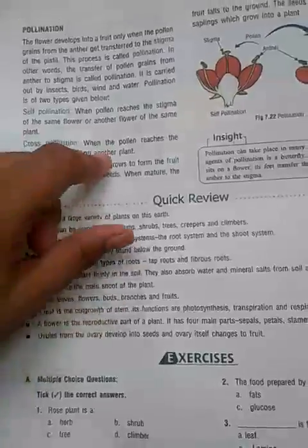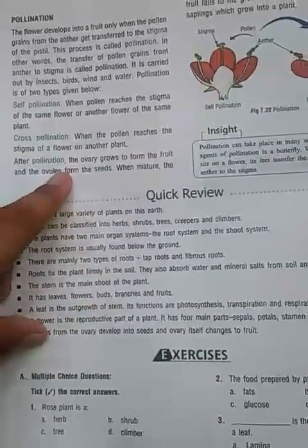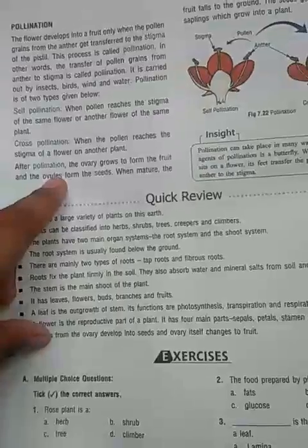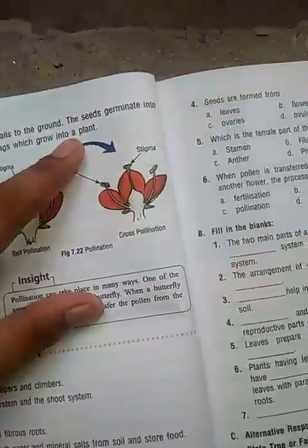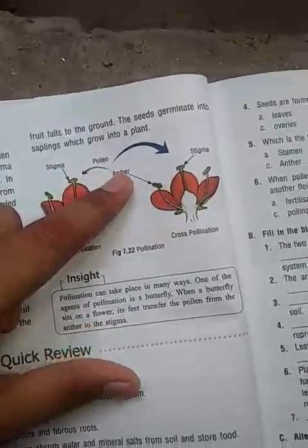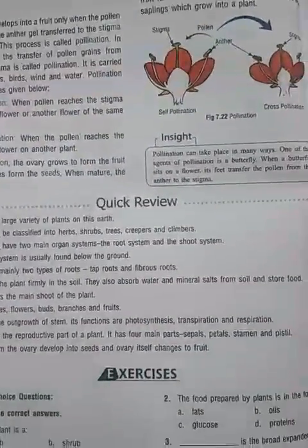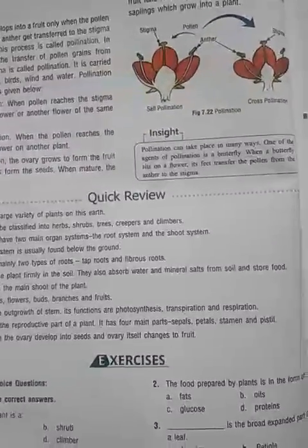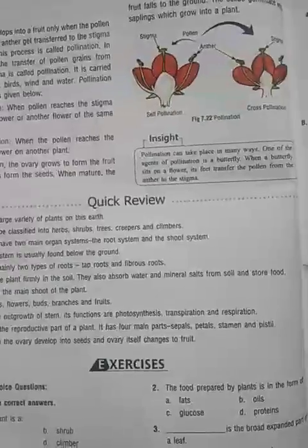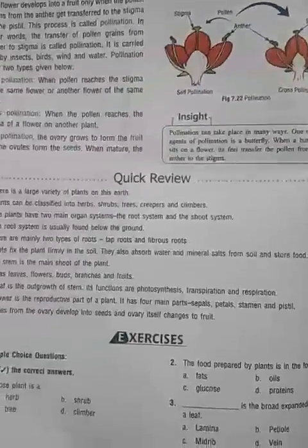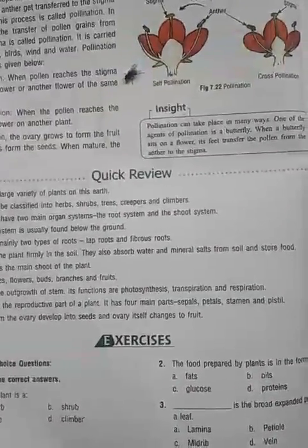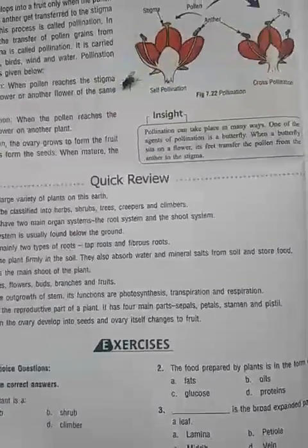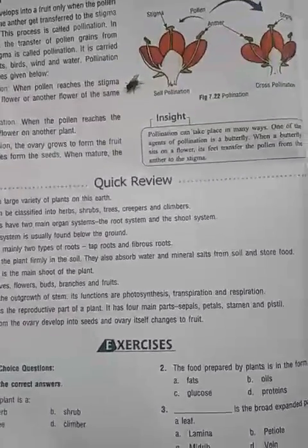After pollination, the ovary grows into a fruit and the ovules convert into seeds. When the mature fruit falls to the ground, the seed germinates into a seedling which grows into a plant. This is the process of generating new plants and forming seeds and fruits during the pollination process. Now do the exercise of this chapter and send it to me. If you have any doubts on this topic, consult with me.